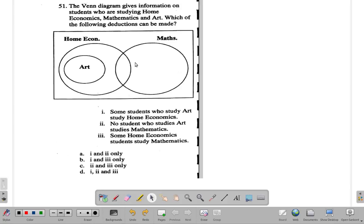All right, what did you get? Let's see. The Venn diagram gives information on students who study home economics right here, mathematics here, and art. Which of the following deductions can be made?